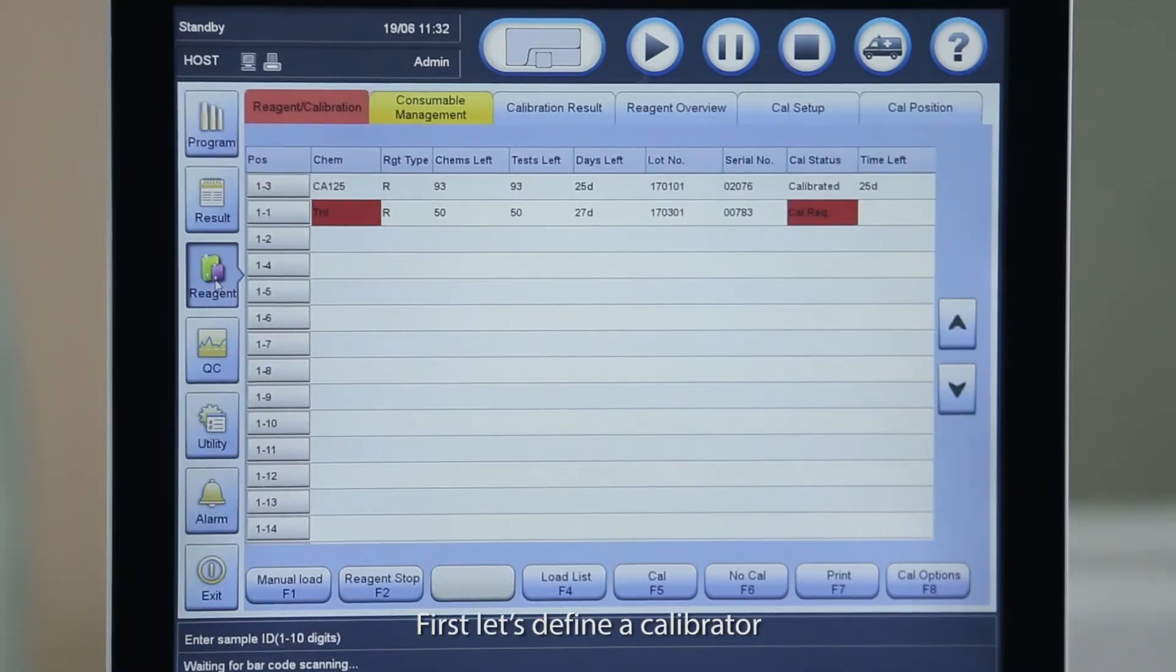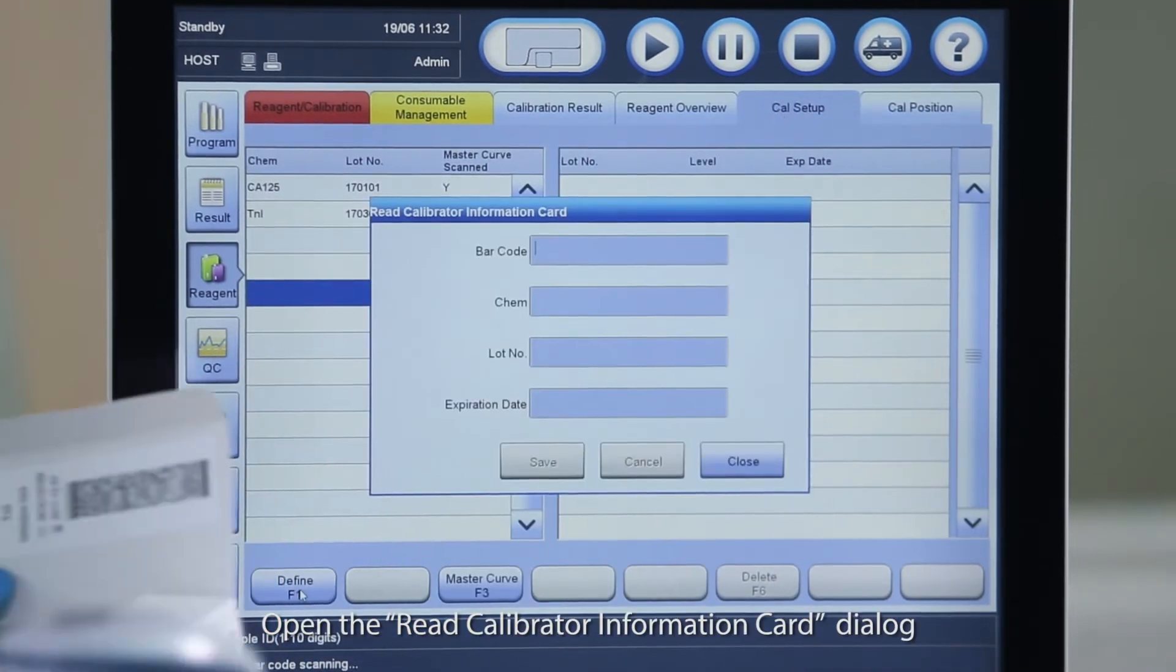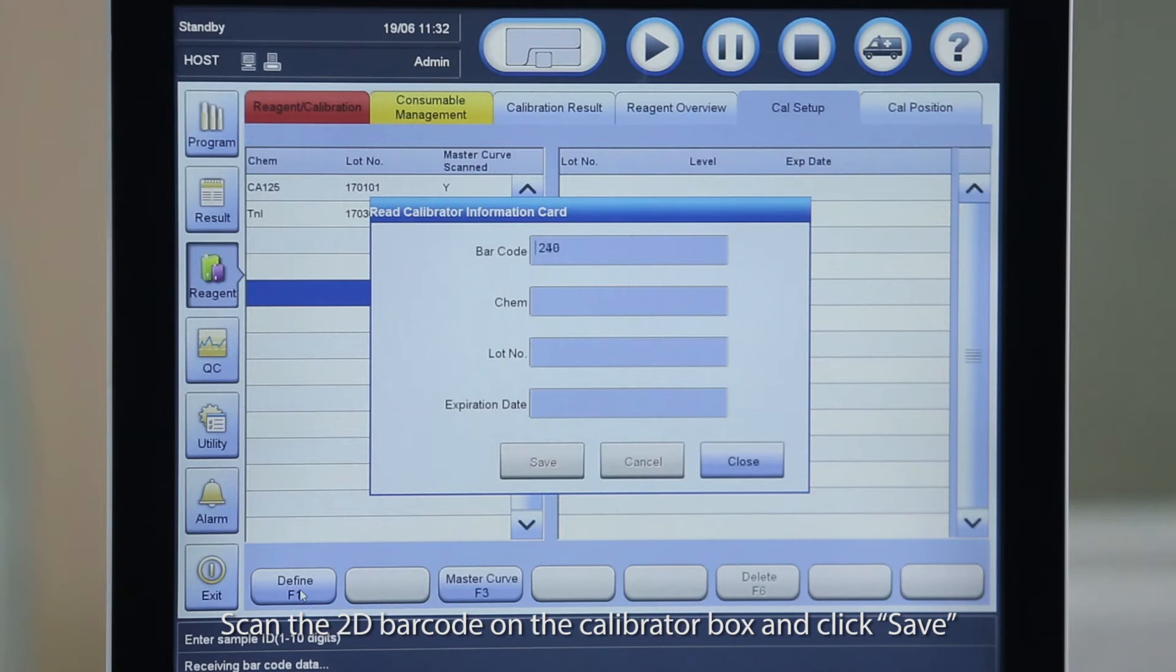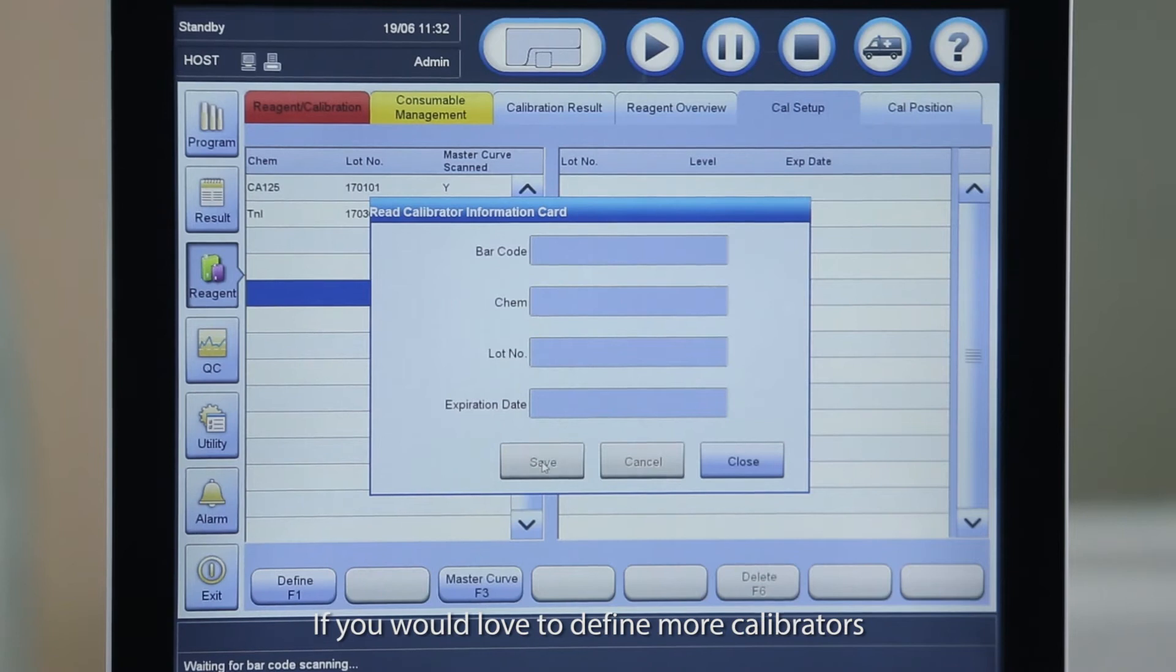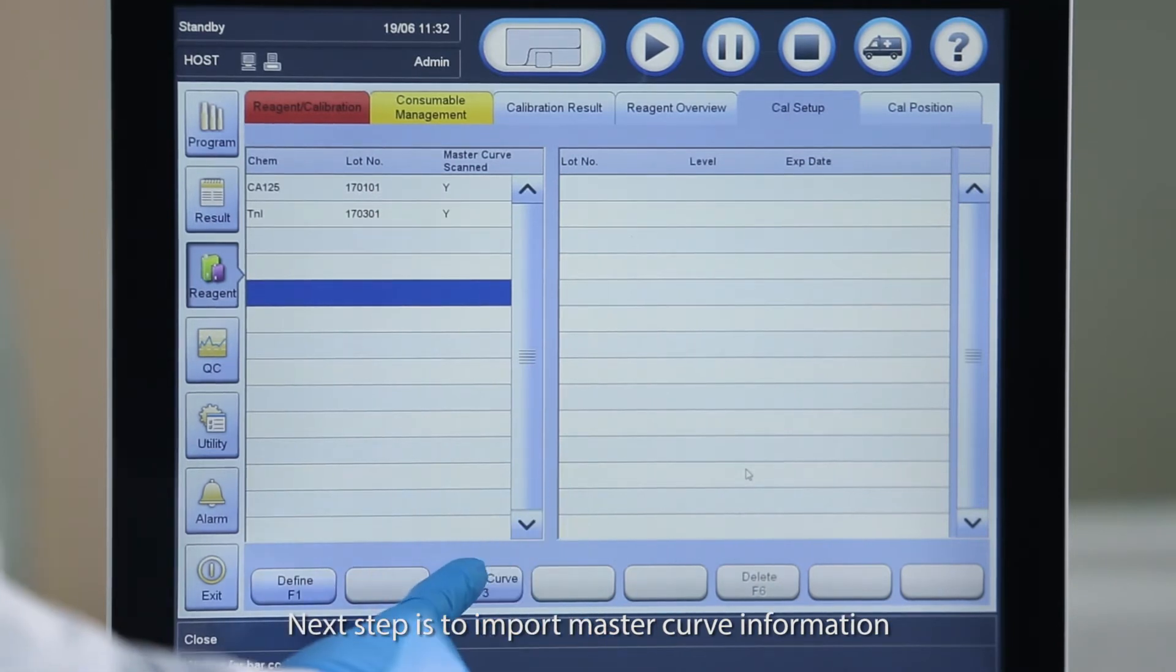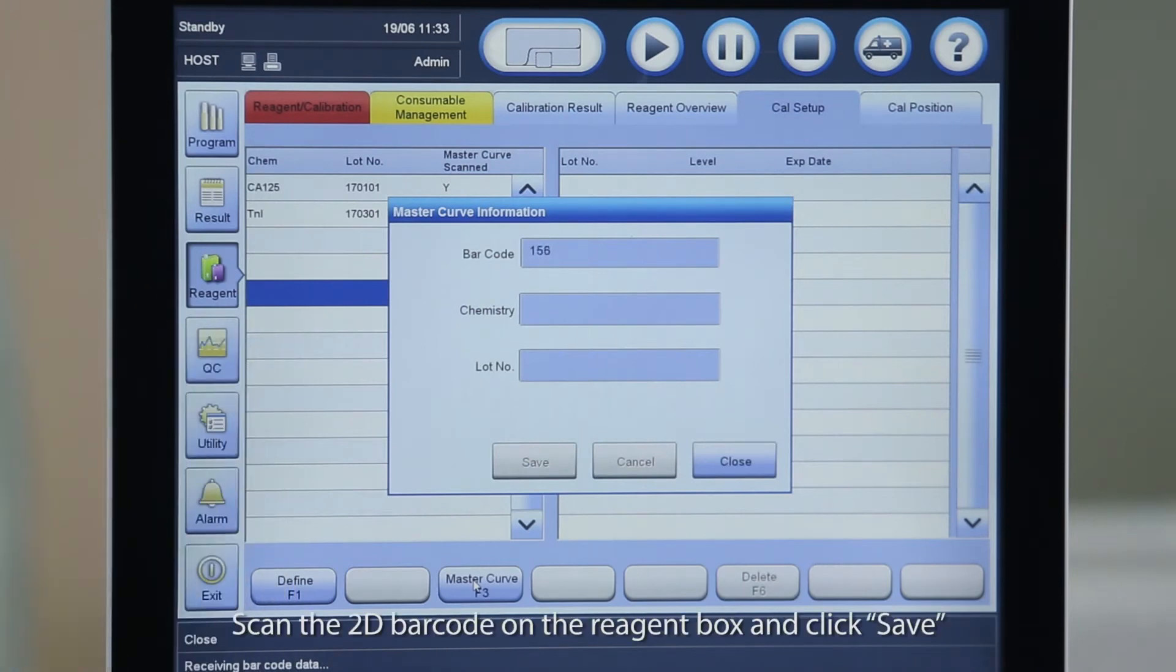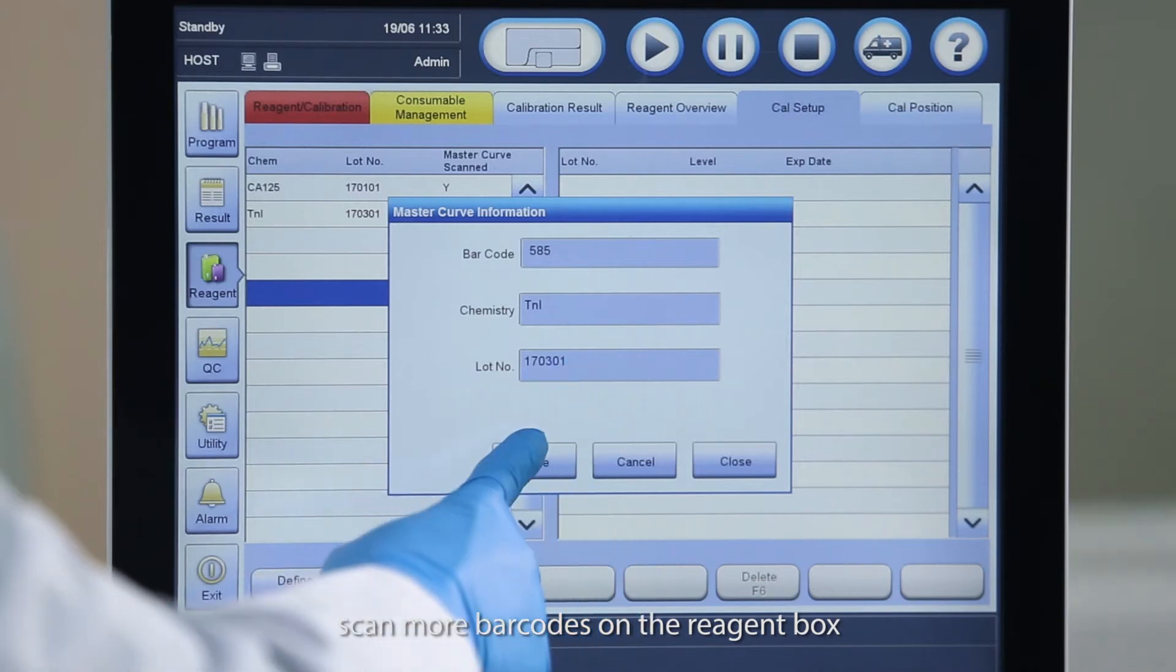First, let's define a calibrator. Open the Read Calibrator Information Card dialog. Scan the 2D barcode on the calibrator box and click Save. If you would like to define more calibrators, scan more barcodes on the calibrator box. Next step is to import master curve information. Open the Master Curve Information dialog. Scan the 2D barcode on the reagent box and click Save. To define more master curves, scan more barcodes on the reagent box.